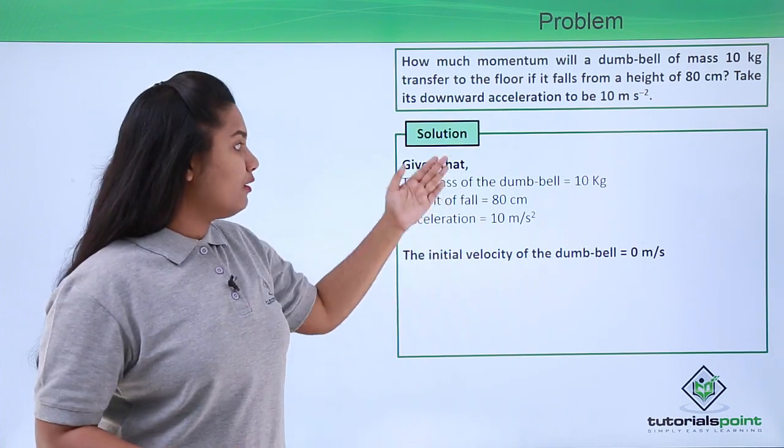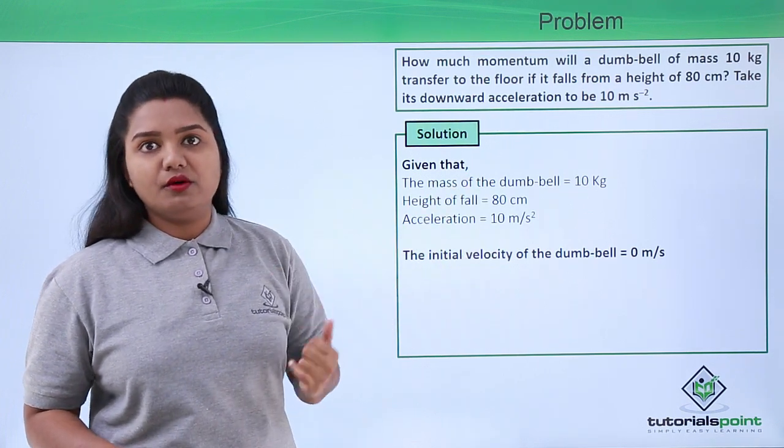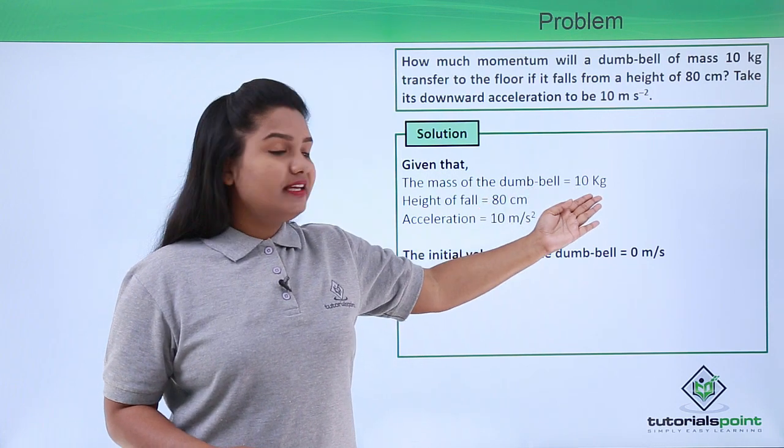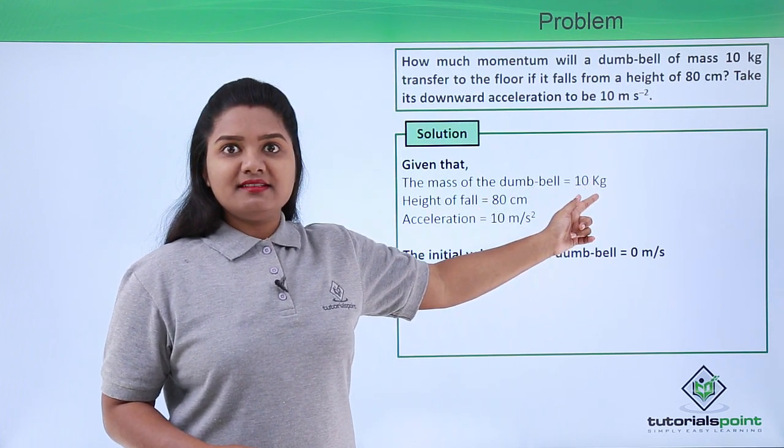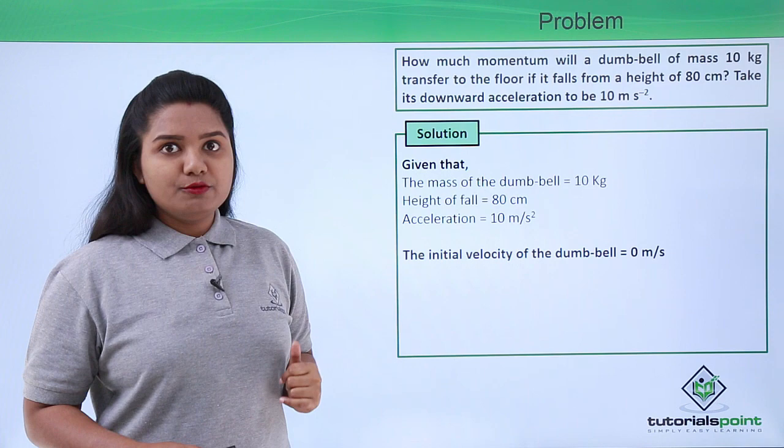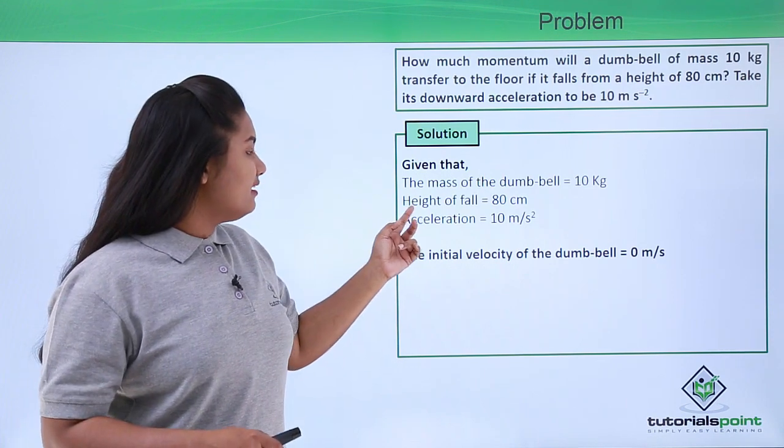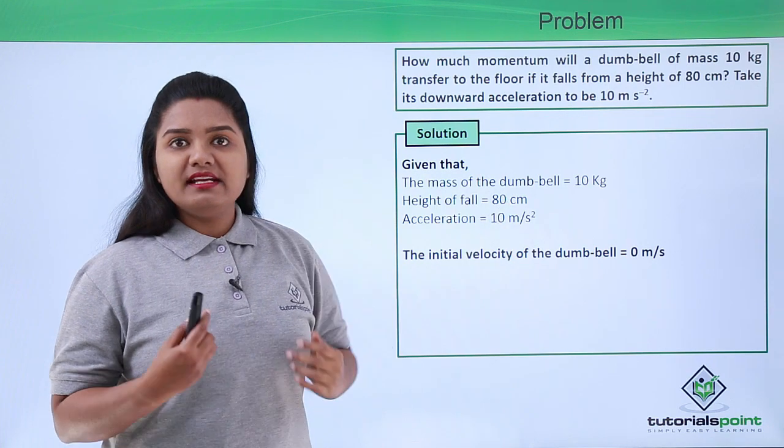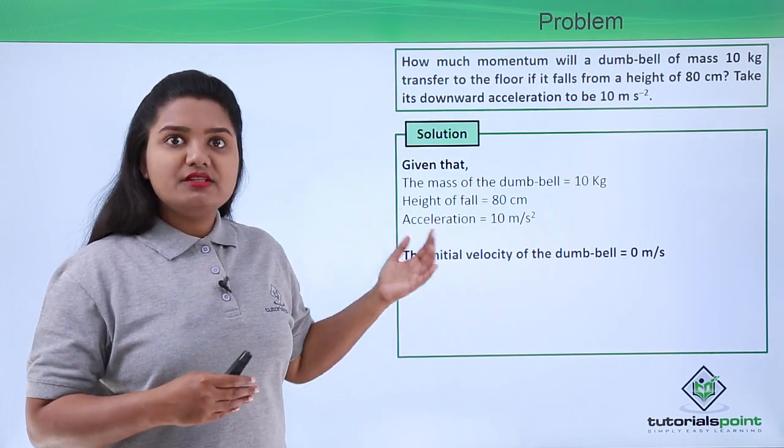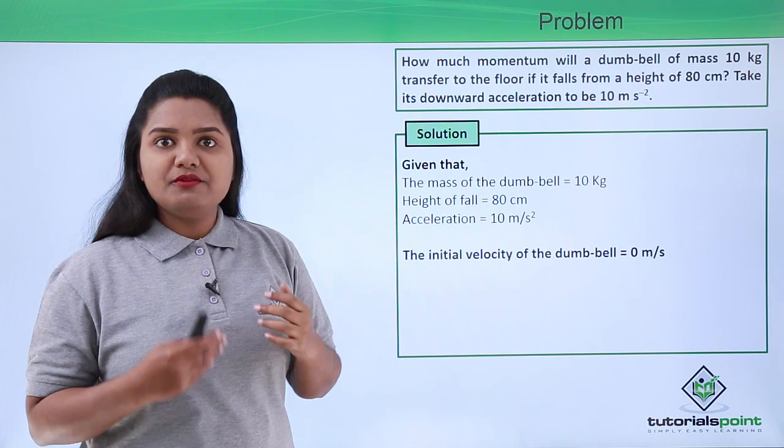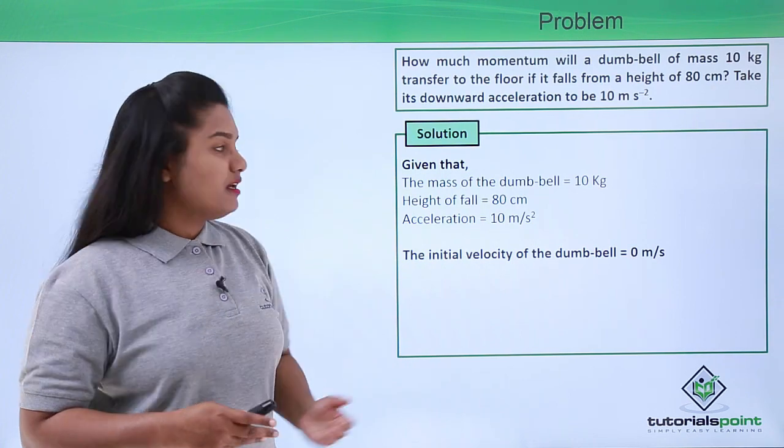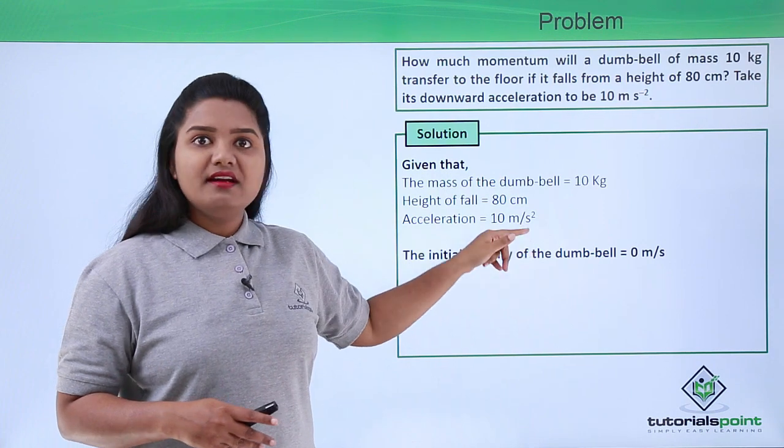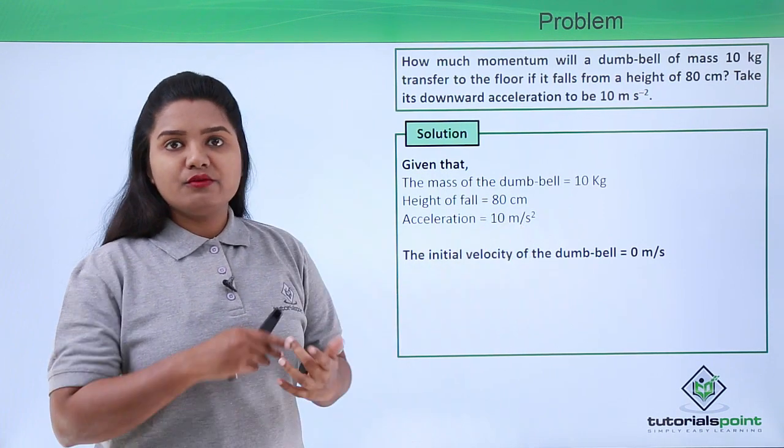The second step is to check whether all these quantities are in SI units. The mass is in kg, which is an SI unit. The height is given as 80 centimeters, which is not an SI unit, so we need to convert it before proceeding. The acceleration is in meters per second squared, which is in SI units.